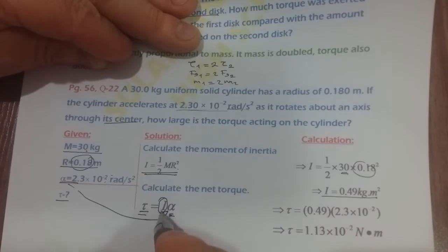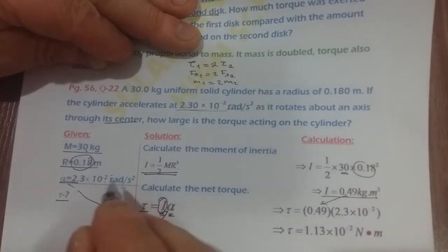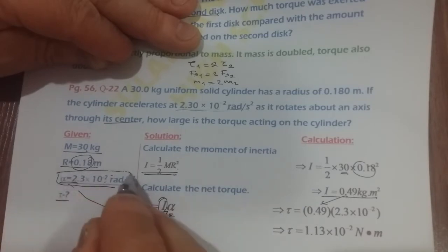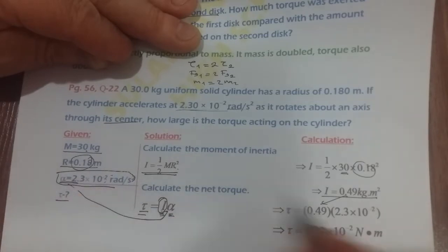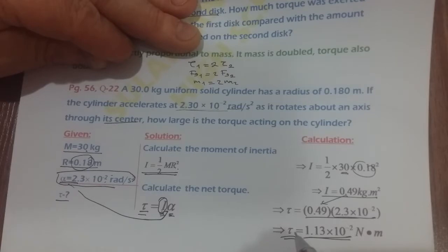Now we can calculate the torque: torque equals I times alpha, where I is 0.49 and alpha is 2.3 times 10 to the power of minus 2. Multiplying them gives a result of 1.13 times 10 to the power of minus 2 newton meters. This is the torque acting on the cylinder.